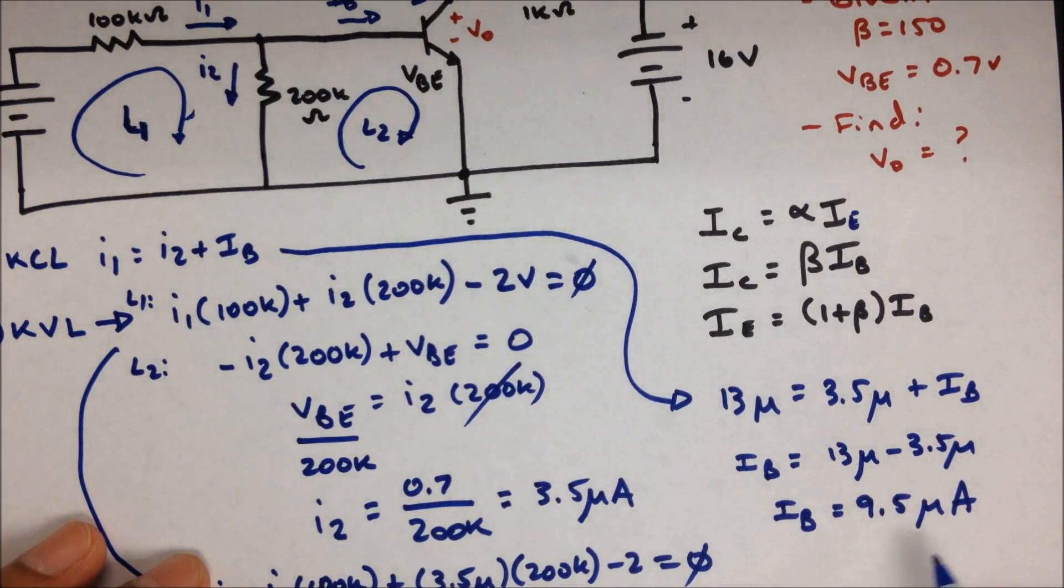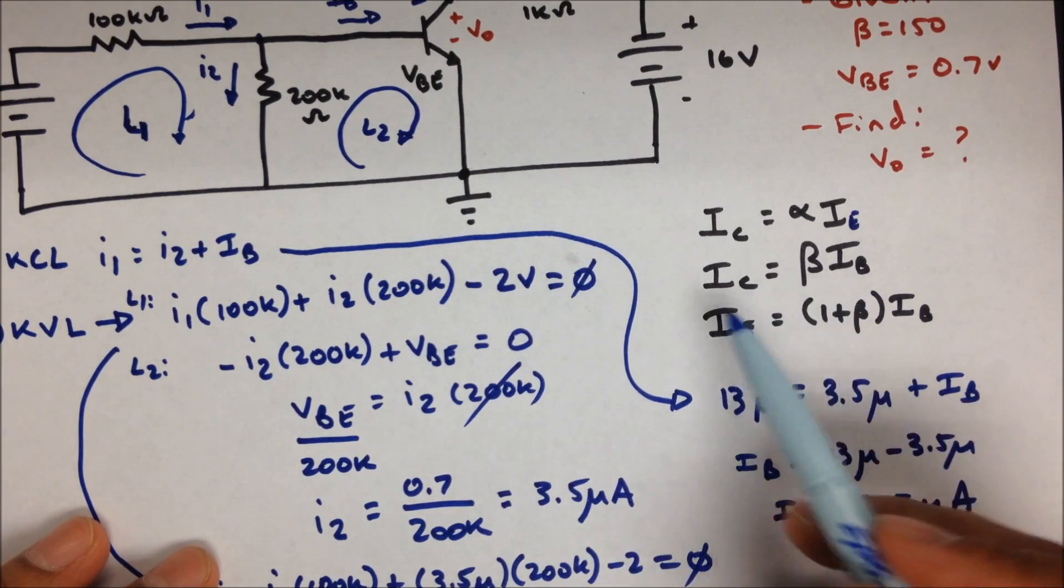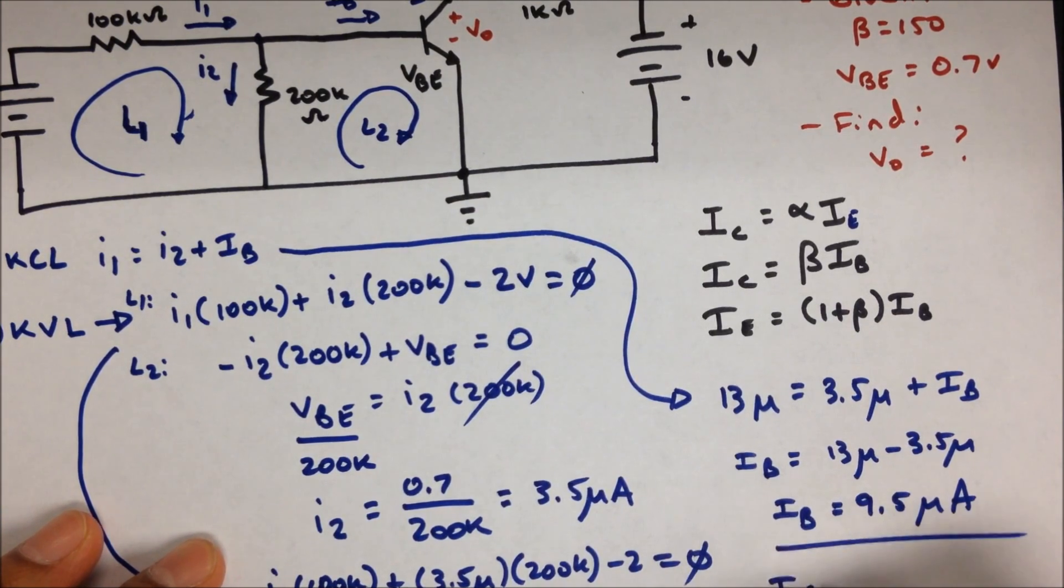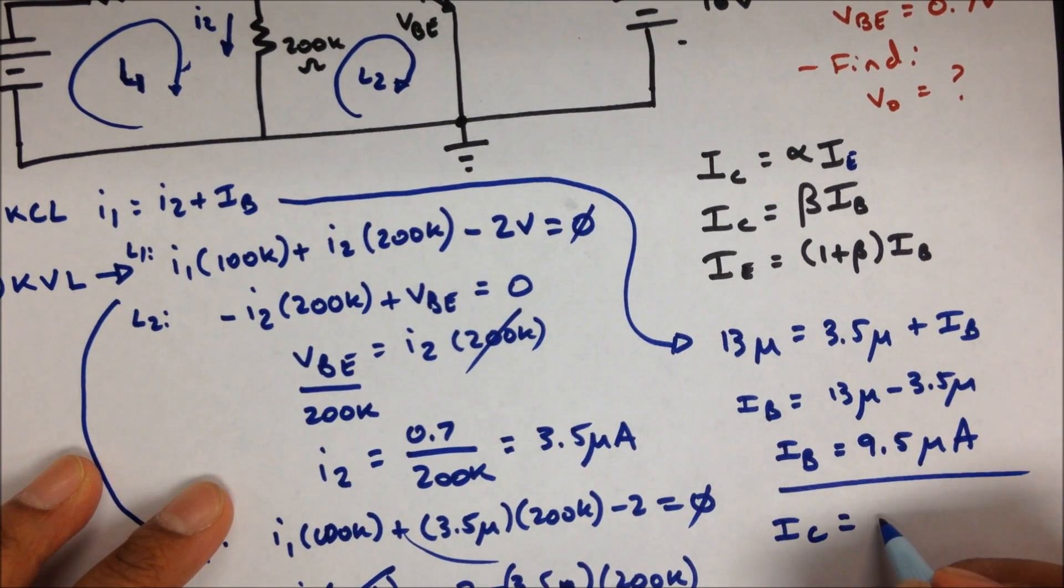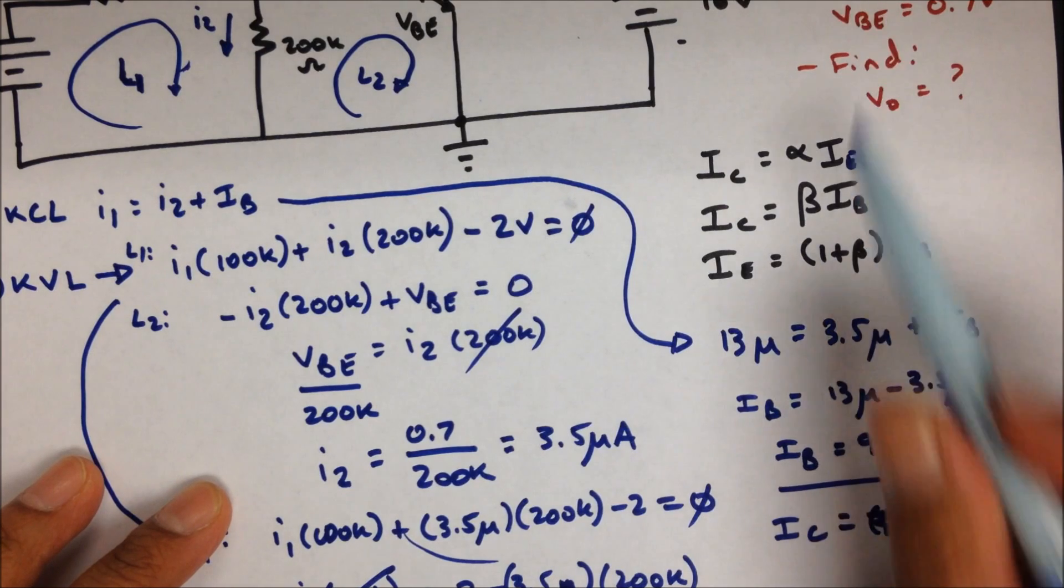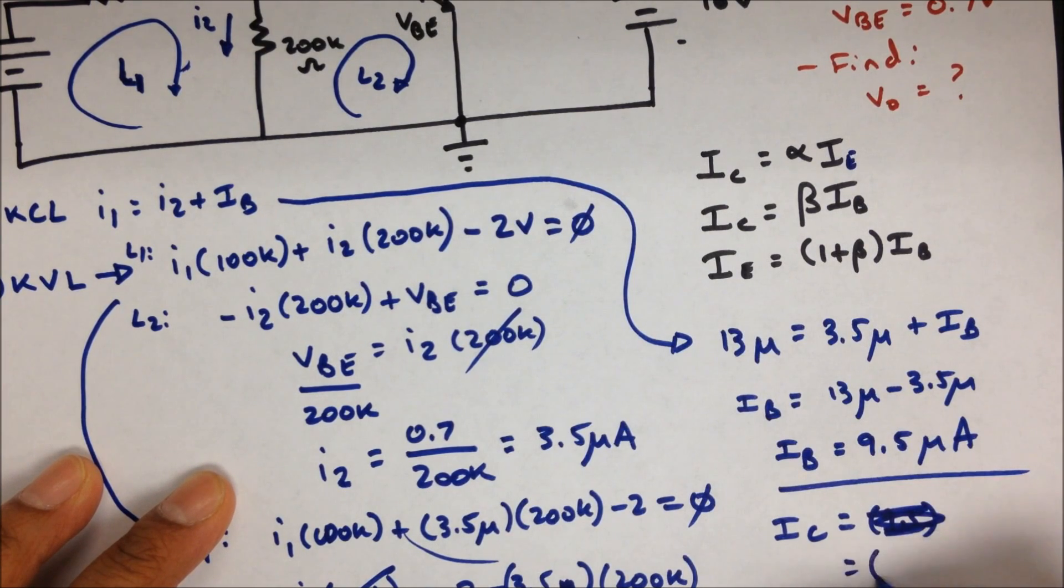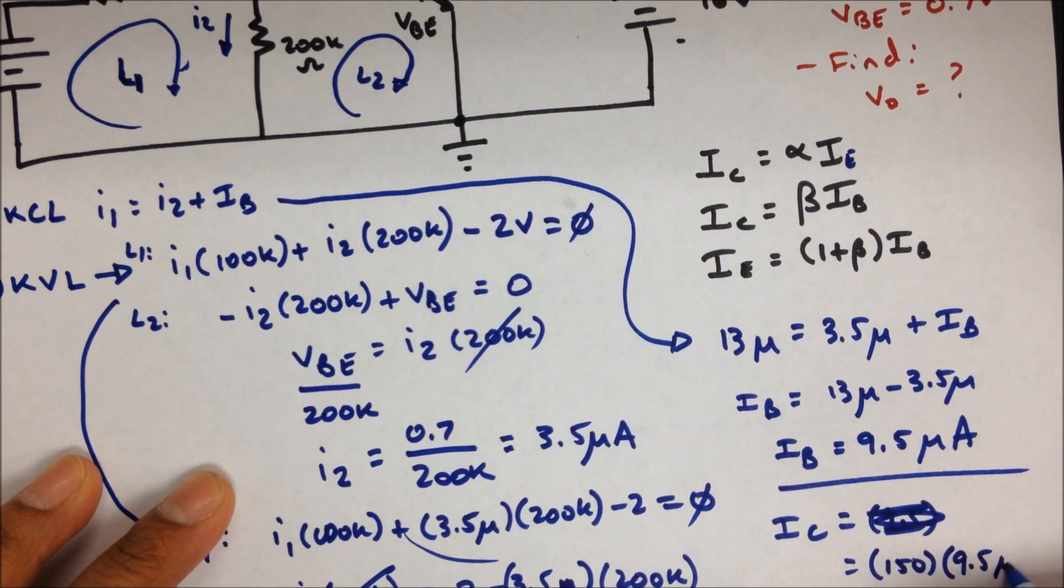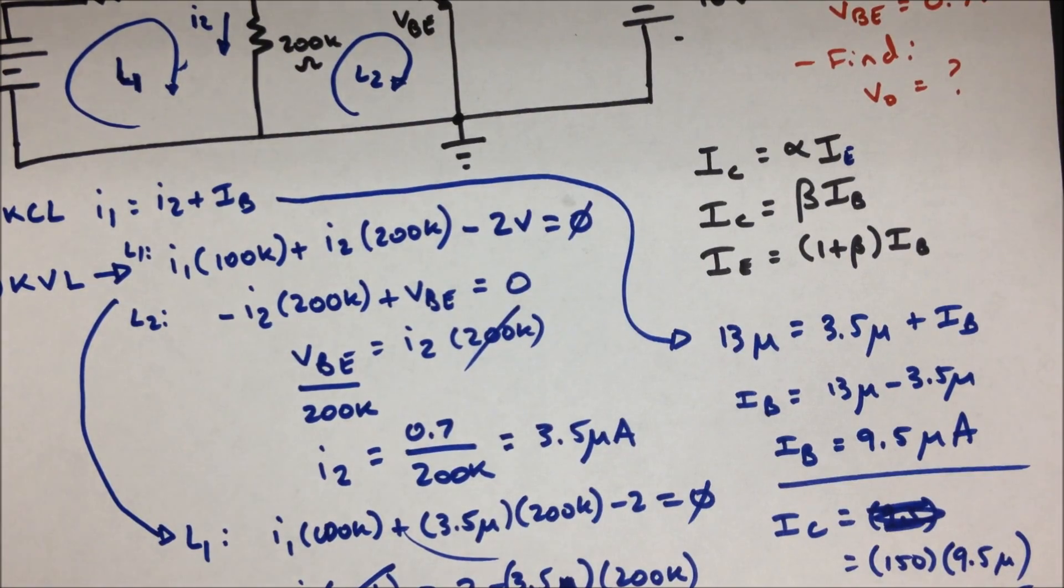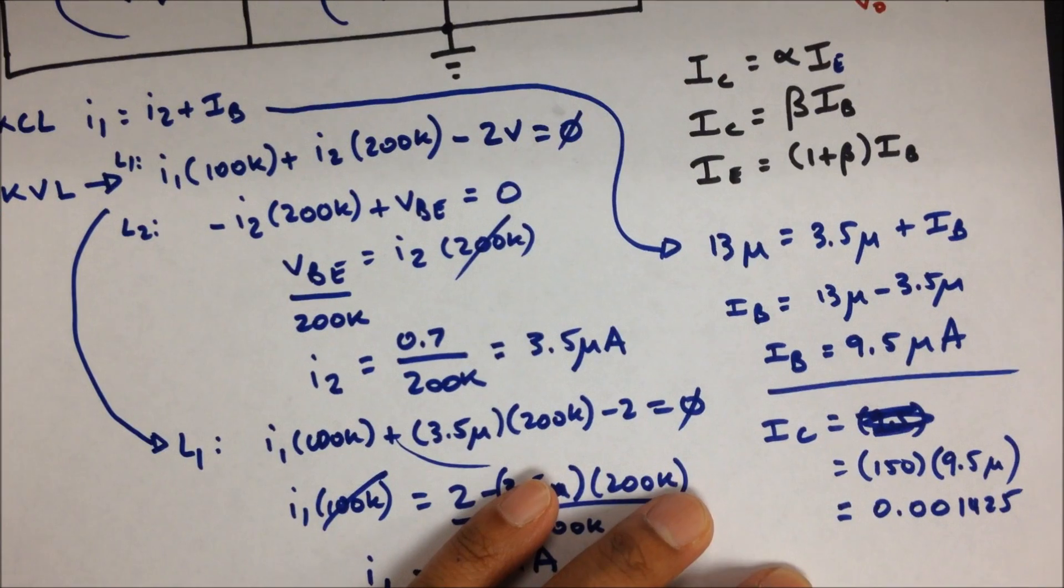Now that we know IB, we can solve for IC using this equation. IC equals, using that equation, our beta is 150, and our IB we just solved for is 9.5 micro. Then we can solve for IC. Now we have IC.